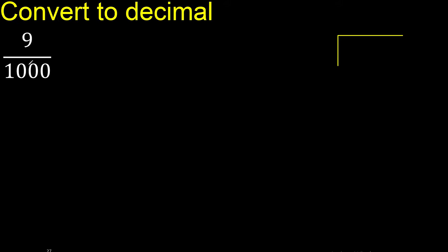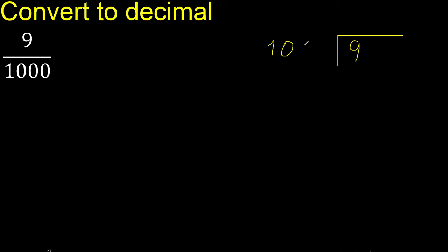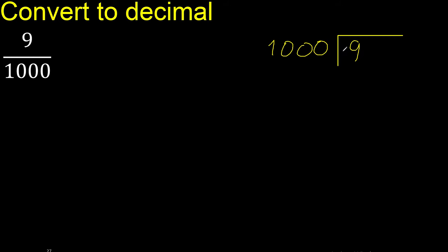9 divided by 1000. 9 is less than 1000, therefore complete — always complete with 0.